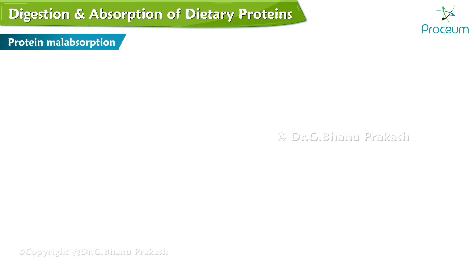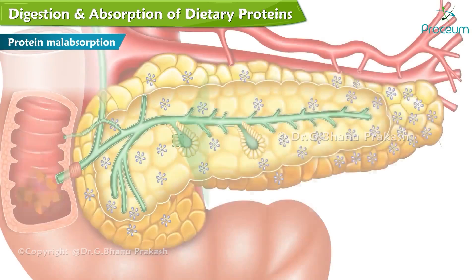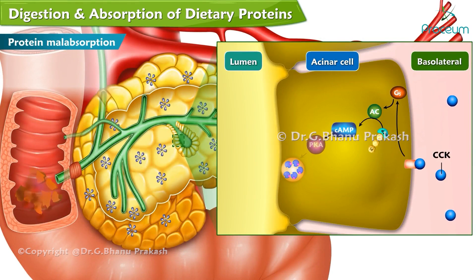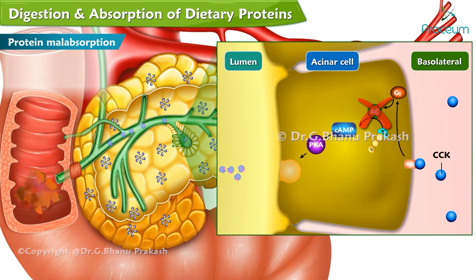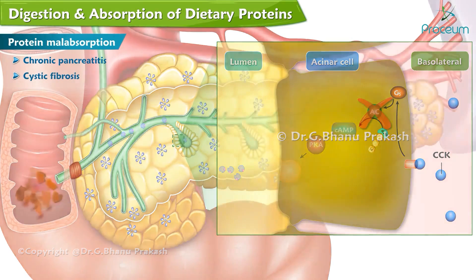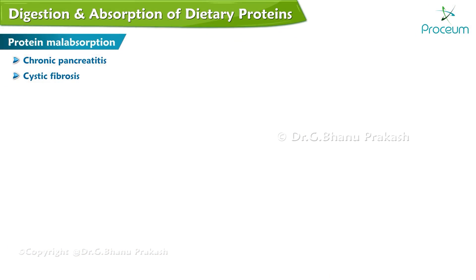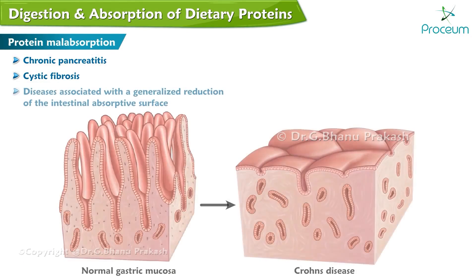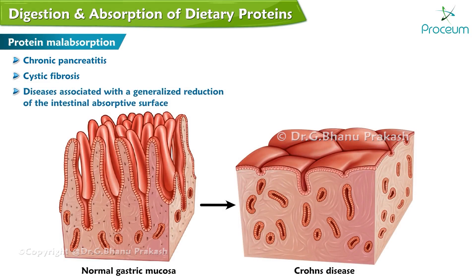Impaired digestion and absorption of dietary protein occurs when pancreatic bicarbonate and protease secretion and/or activity is impaired, as in chronic pancreatitis or cystic fibrosis. Protein malabsorption can also occur in diseases associated with a generalized reduction of the intestinal absorptive surface.